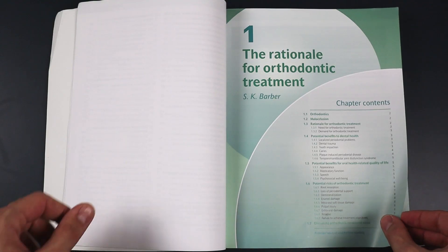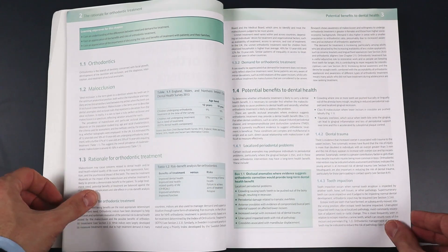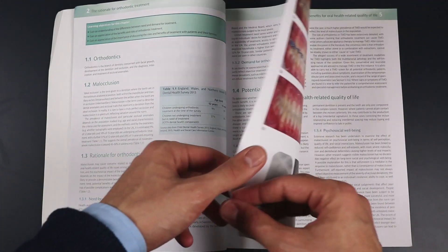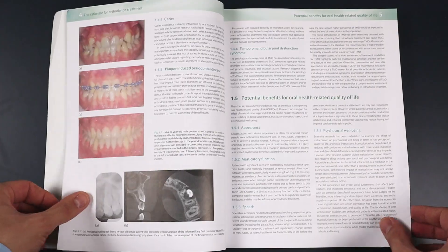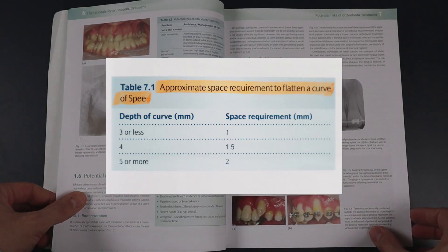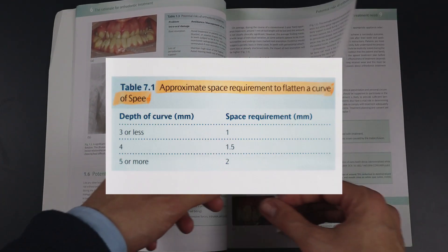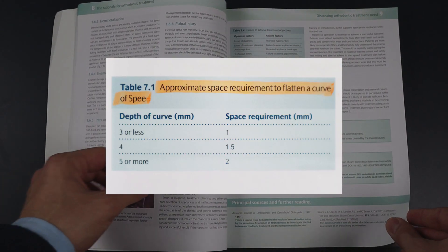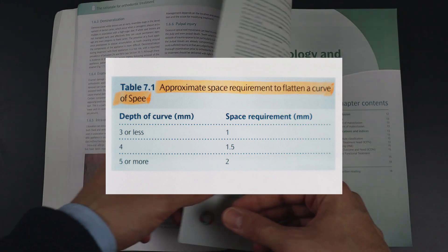The book also has a web edition where you can download a patient prescription for wearing retainers and a patient card used by the authors. I learned many small tips and tricks throughout the book myself — for example, the correlation between the depth of the curve of Spee and the space required for its flattening.